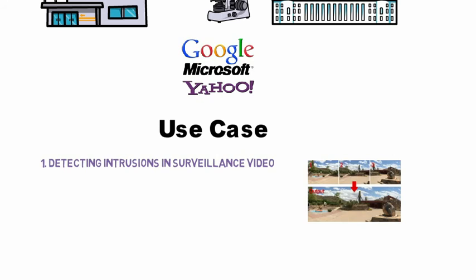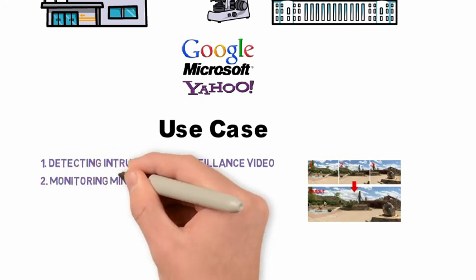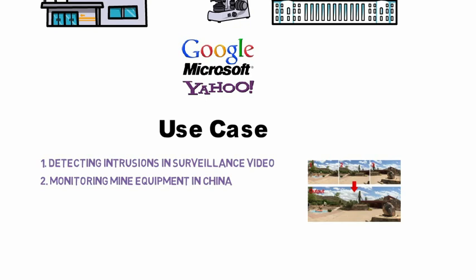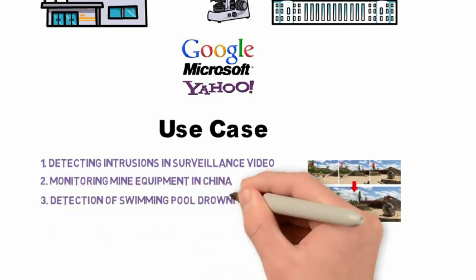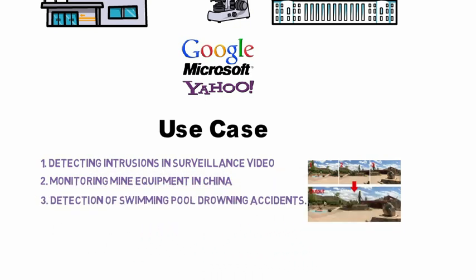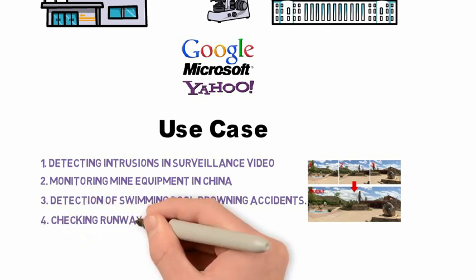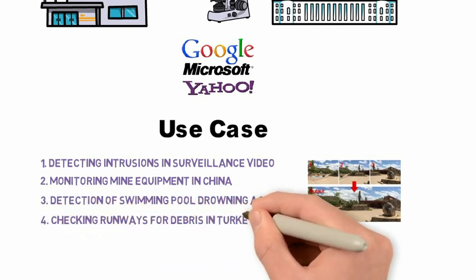There are many examples of where OpenCV has been used extensively: stitching images in the real world, detecting intrusions in surveillance video, monitoring mine equipment in China, detection of swimming pool drowning accidents in Europe, checking runways for debris in Turkey, and many more.